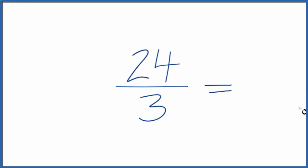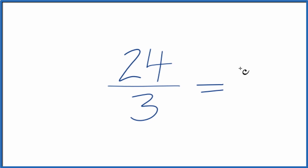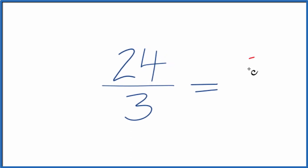To do that, we need to find the greatest common factor. If I divide 24 by 3, that's 8.